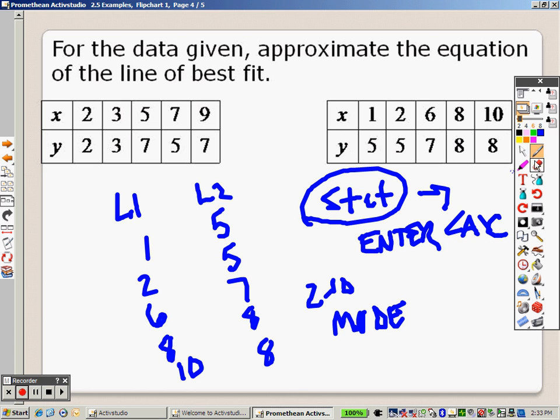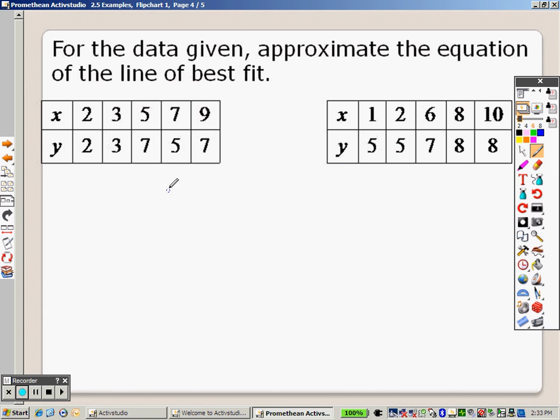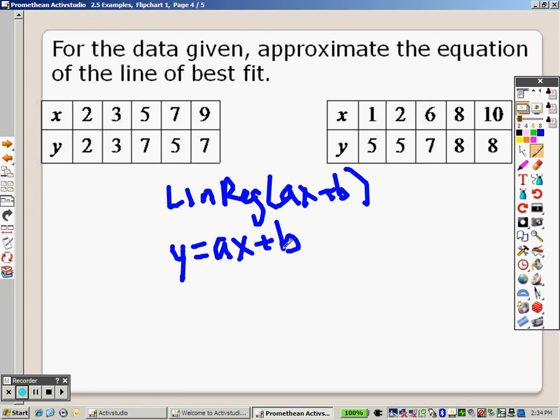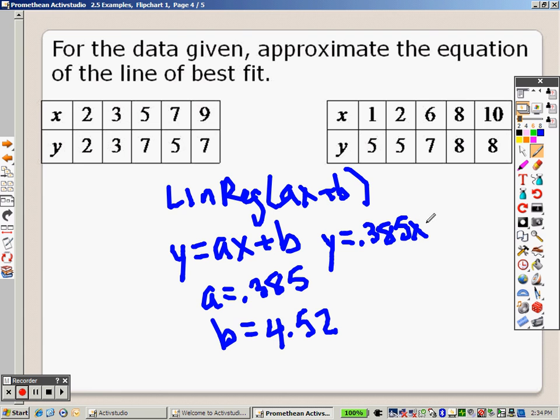Go down to where it says LinReg, AX plus B. Press ENTER again, and press ENTER one more time. You end up getting a screen that looks like this: Y equals AX plus B, where A equals 0.385 and B equals 4.52. So your final answer is Y equals 0.385X plus 4.52.